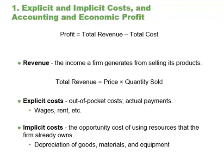We can distinguish between two types of costs: explicit and implicit. Explicit costs are out-of-pocket costs — that is, actual payments. Wages that a firm pays its employees or rent that a firm pays for its office are explicit costs. Implicit costs are more subtle but just as important. They represent the opportunity cost of using resources that the firm already owns. Implicit costs also include the depreciation of goods, materials, and equipment that are necessary for a company to operate.